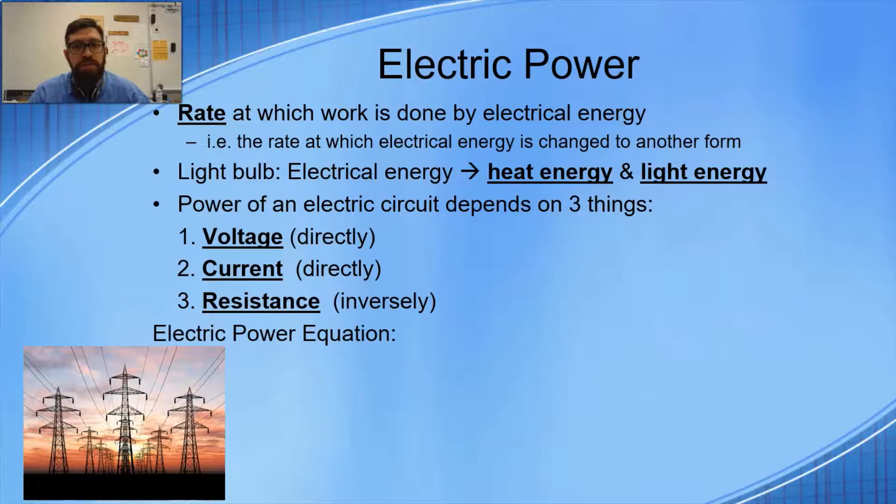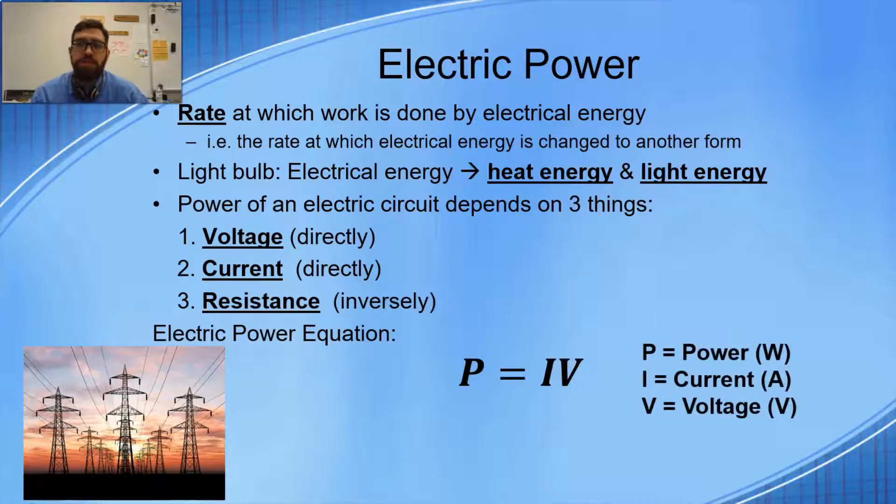So all of this is shown in the electric power equation, which is P equals IV. Pretty simple equation. P equals IV: power equals current times voltage. And again, remember, we've said this before, but the W here does not stand for work. It stands for watts. The unit for power is watts. So pause the video, write that down, and make sure you understand that very simple equation: P equals IV.